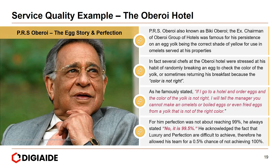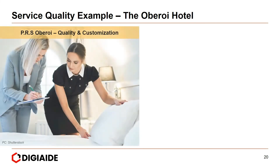For him, perfection was not about reaching 99%. He always stated it has to be 99.5%. He acknowledged the fact that luxury and perfection are difficult to achieve. Therefore, he allowed his team a 0.5% chance of not achieving 100%.